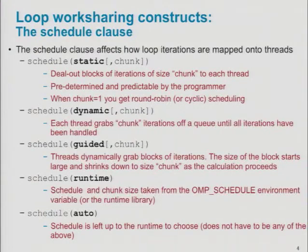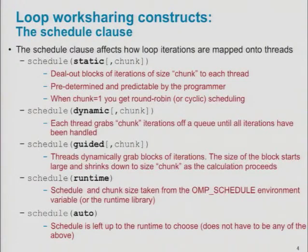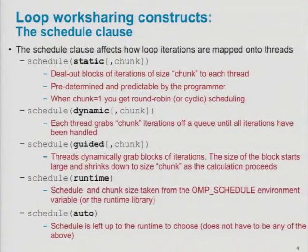The auto schedule at the bottom simply declares that the compiler gets to make its own choices, and it enables implementations to do sophisticated things. For example, some teams are thinking about taking a dynamic schedule, running it once, recording the results, and then reusing that same schedule instead of redoing a dynamic one — leveraging the variability profile from the first run. I don't know of any systems actually shipping with that today, but the auto mechanism is what allows implementations to do so.